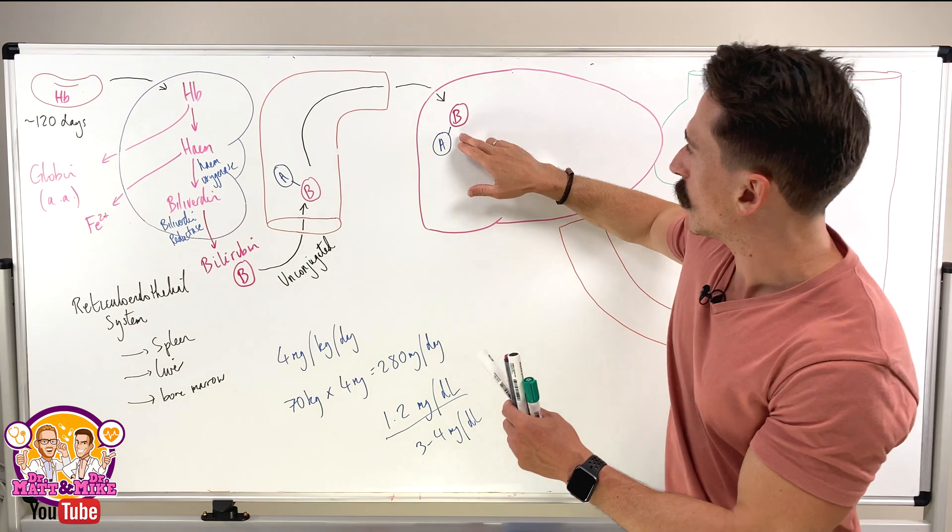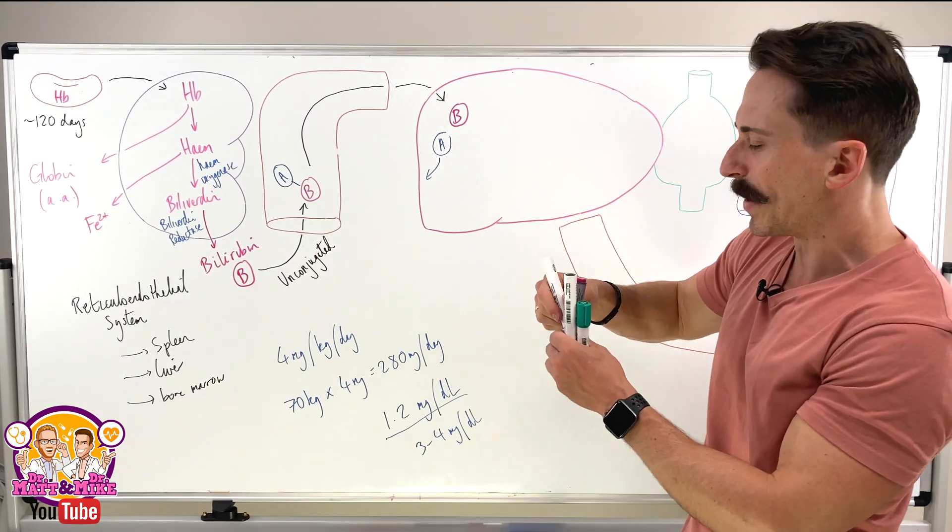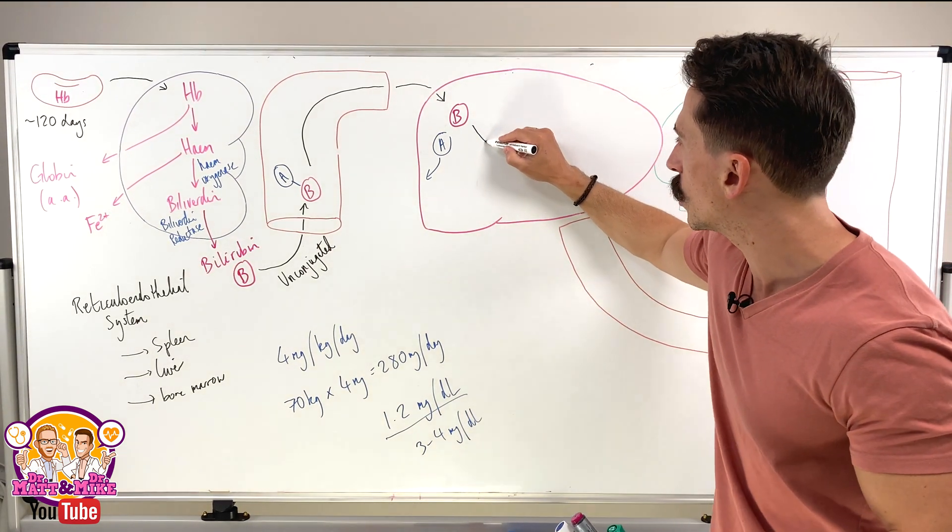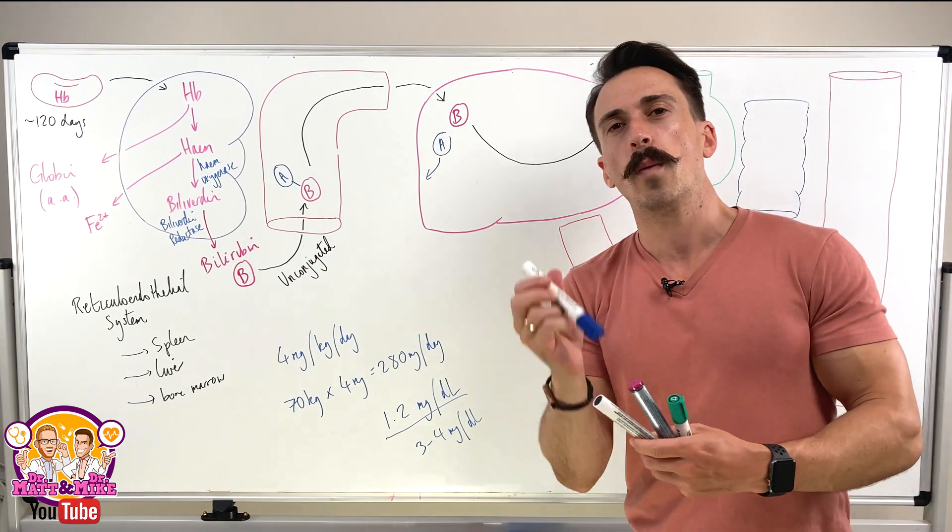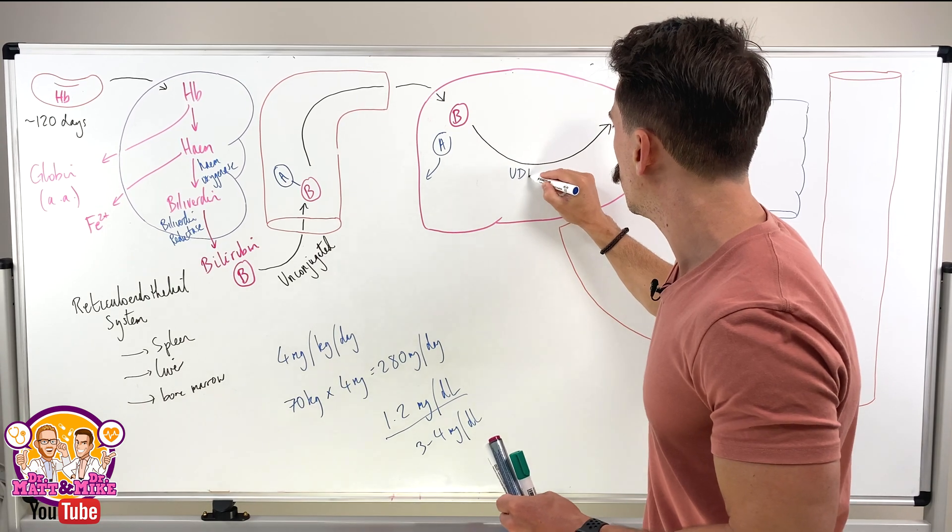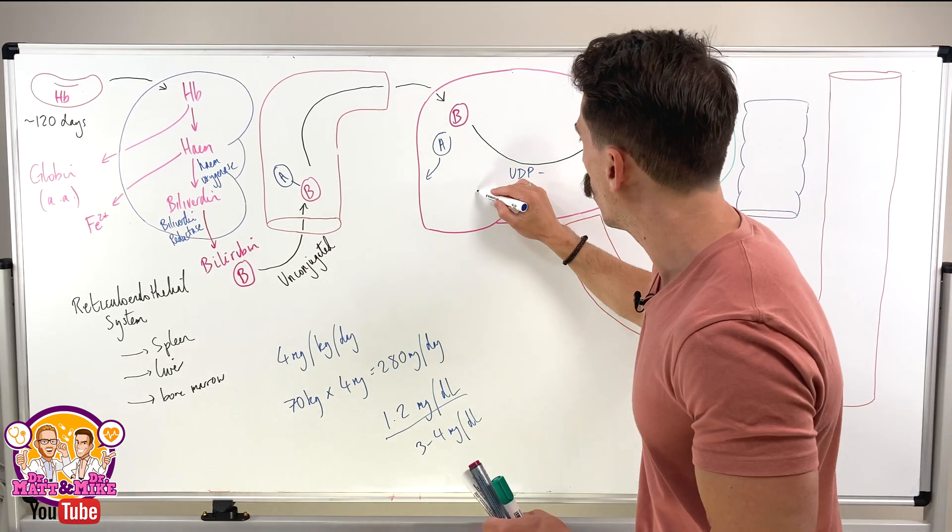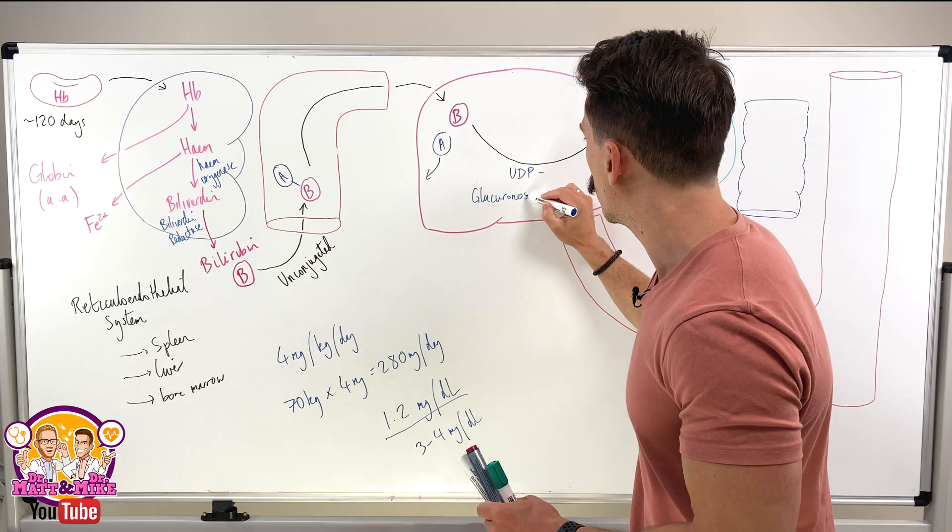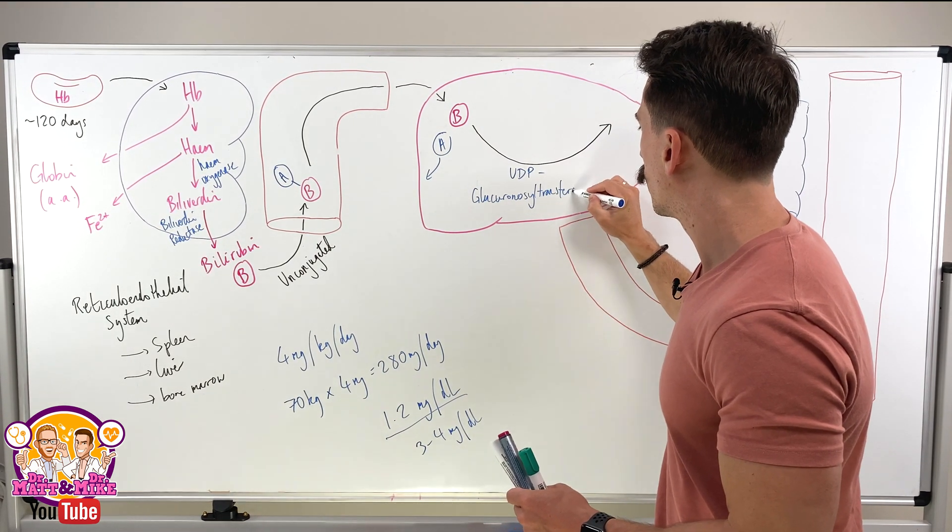So once this has happened, I told you the albumin bugs off, it goes somewhere else. But that bilirubin now needs to be conjugated because remember, it's unconjugated and we now need to conjugate it. And in order to do so, we need an enzyme that has an absolutely ridiculously long name that you need to know, which is UDP-glucuronosyltransferase.